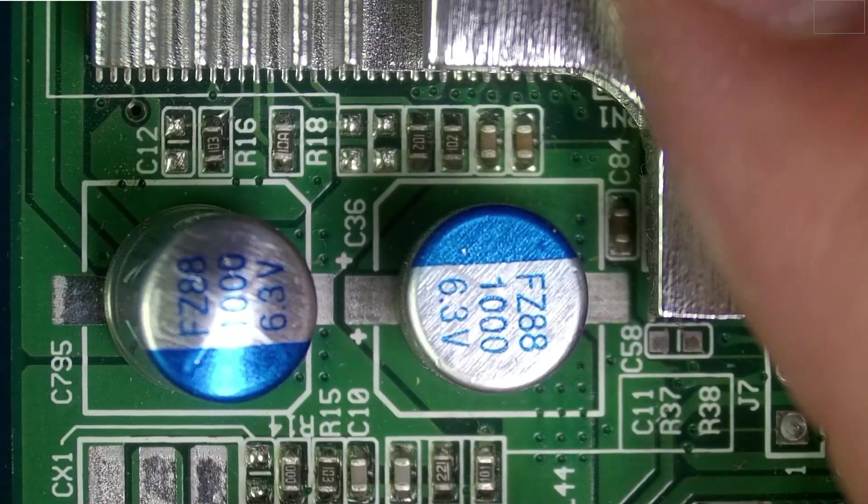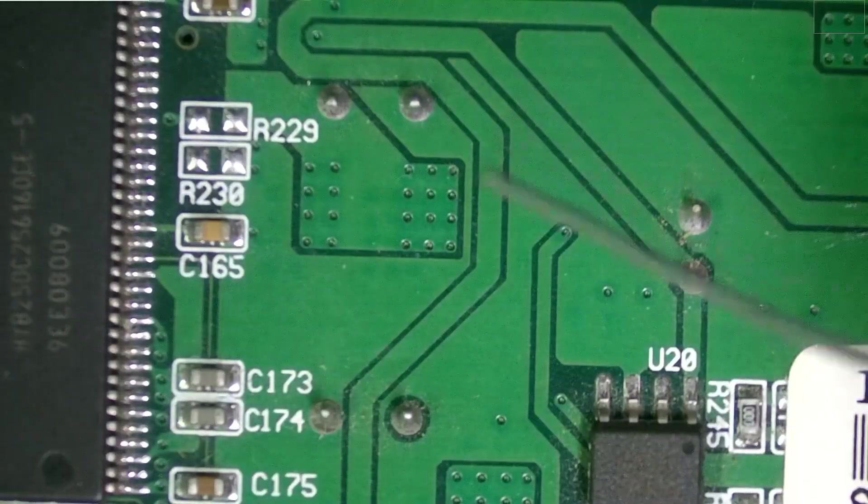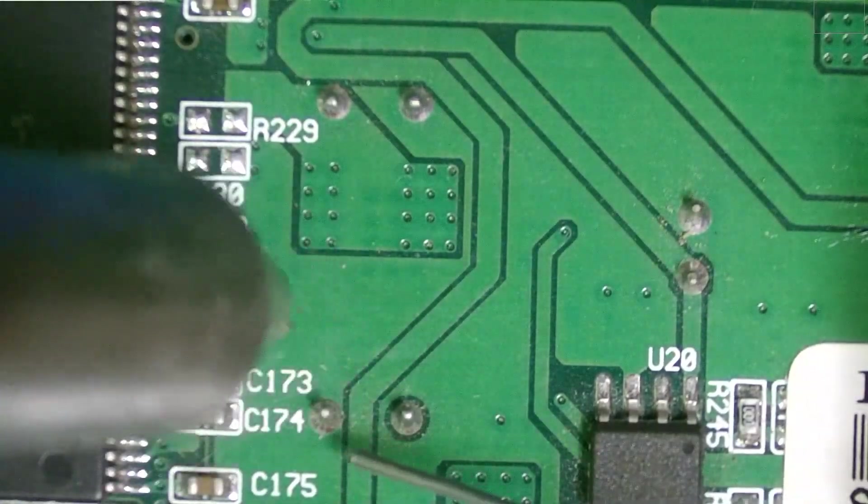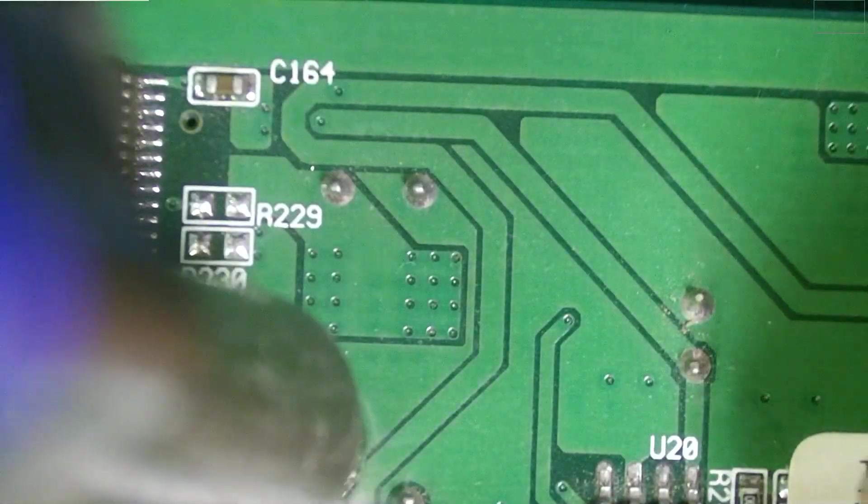Okay, so we have two more 6.3 volts, 1000 microfarads. We'll do the same thing. We'll be using our desolder pump again, just because that seems to be the most efficient way.